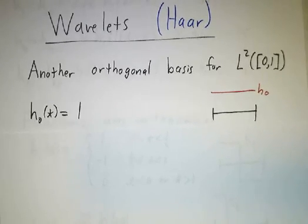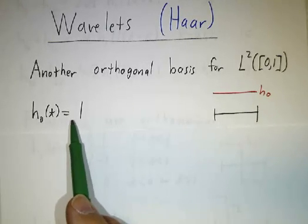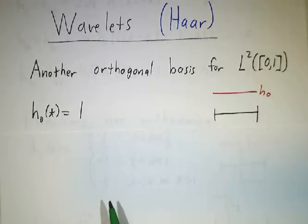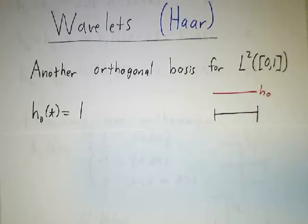So our very first function is just going to be the function 1. So there it is. There's a picture of our function h₀. h₀ of t is 1 for all points between 0 and 1.